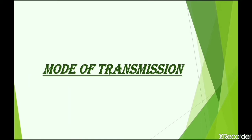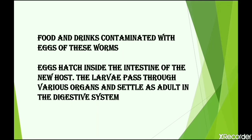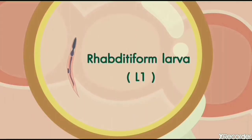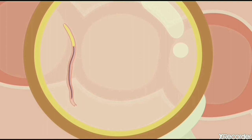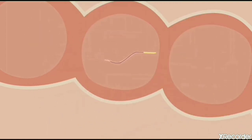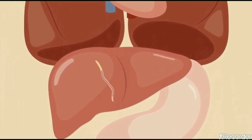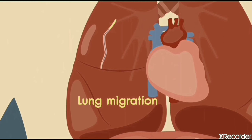Mode of Transmission: The main mode of transmission is contaminated food and drink having eggs of these worms. The eggs hatch inside the intestine of the new host, that is a human being. The larvae pass through various organs and settle as adults in the digestive system. After infective eggs are swallowed, the larvae hatch and invade the intestinal mucosa. They are carried via circulation to the lungs, where the larvae mature further and penetrate the alveolar walls.